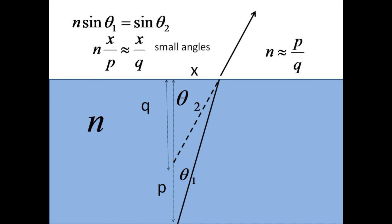We can see this ratio by examining the ray coming from an actual depth of p and giving an apparent depth of q, and considering the angles theta1 and theta2. According to Snell's law, n times sine theta1 equals 1 times sine theta2. For small angles, the sine of theta1 is approximately the lateral distance x divided by p, and the sine of theta2 is approximately x divided by q. Thus, n is approximately p divided by q.